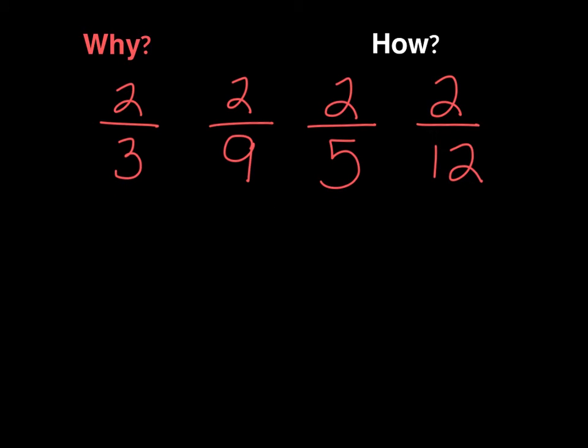So with all four of these fractions, I would get two parts. But if I'm going to go from smallest to largest, then that means I'm going to choose the largest denominator is going to be my smallest fraction because it has the most pieces, and the pieces are going to be the smallest.